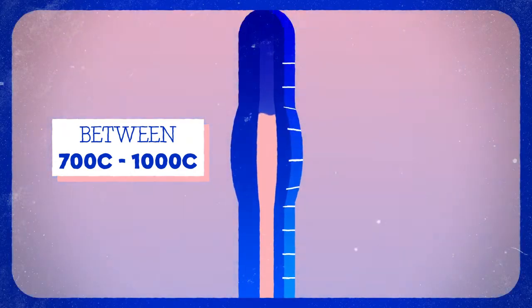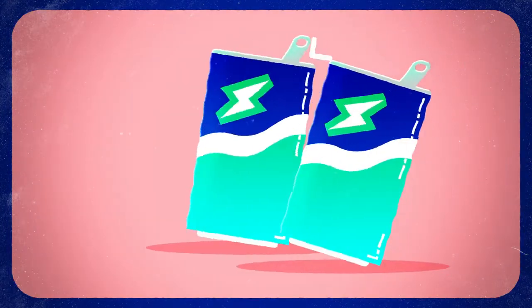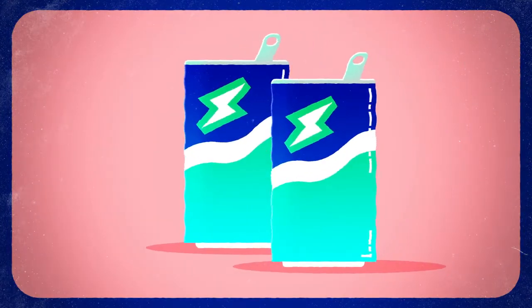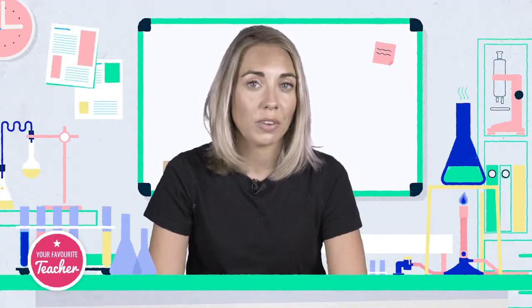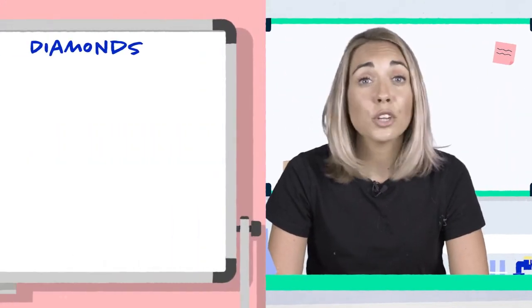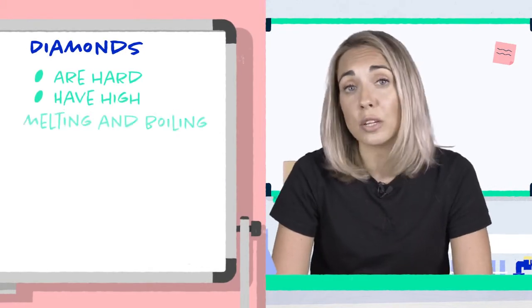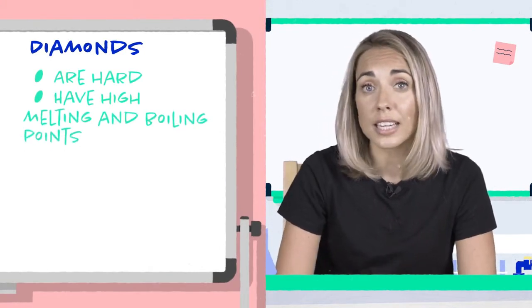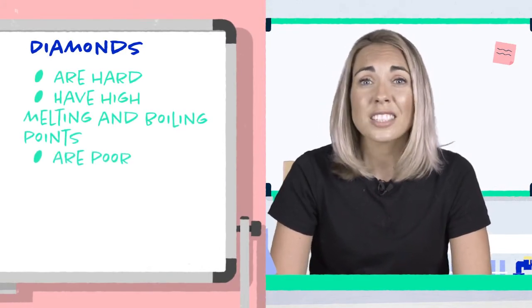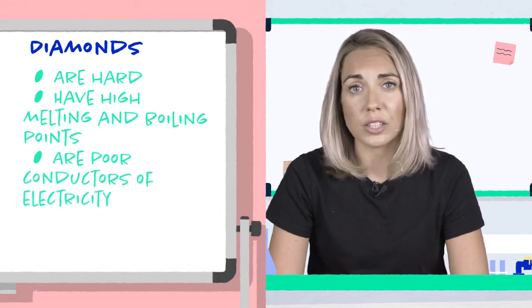The melting and boiling point is very high, as more energy is needed to break the strong covalent bonds. As there are no charges caused by free or delocalised electrons, diamond is a poor conductor of electricity.